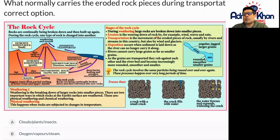Erosion is the weathering down of rock by, for example, wind, waves and rain. Transportation is the movement of the eroded pieces of rock, usually by rivers and streams in this country, but also by wind and glaciers.